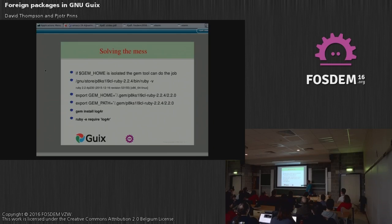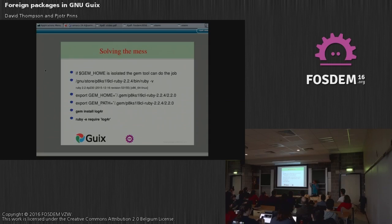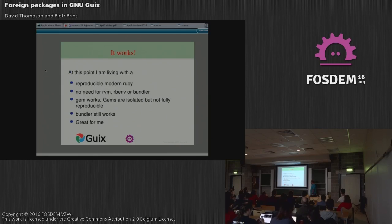It's perfect isolation because if you change the Ruby, if you put another Ruby in the path, you can again override GEM_HOME and GEM_PATH and they'll be completely isolated from each other. As a software developer, this already is Nirvana. I'm working with a reproducible modern Ruby for development. I have no need for RVM, RBN, or Bundler whatsoever. Gem works fine. Gems are isolated.